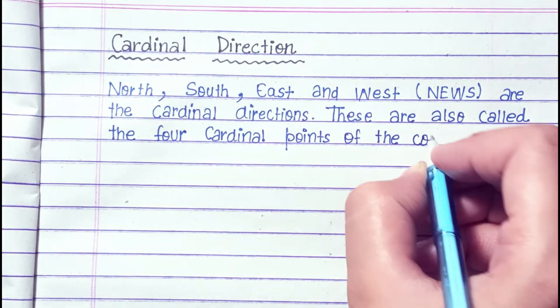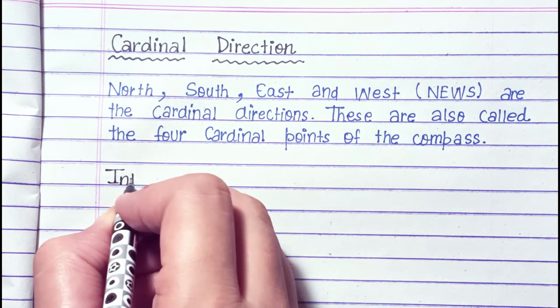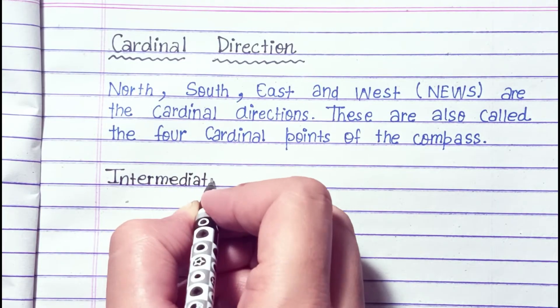Cardinal direction. North, south, east, and west are the cardinal directions. These are also called the four cardinal points of the compass.